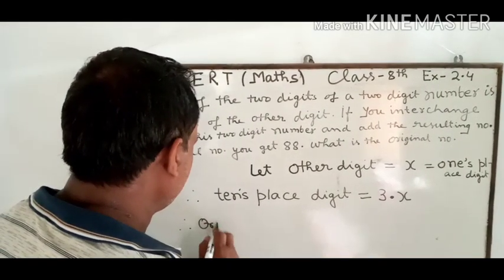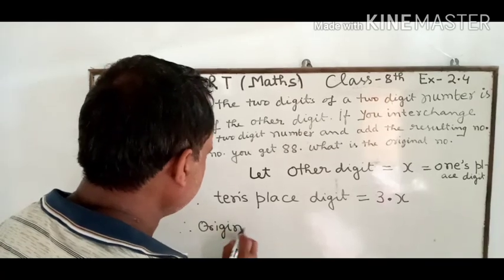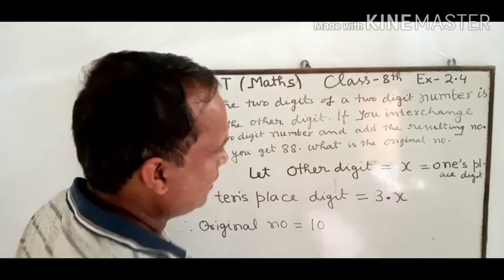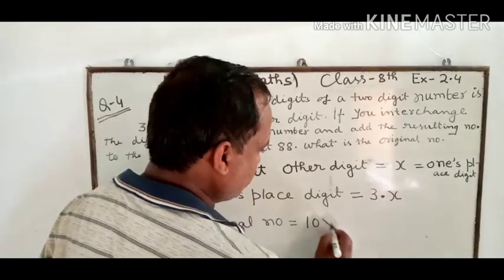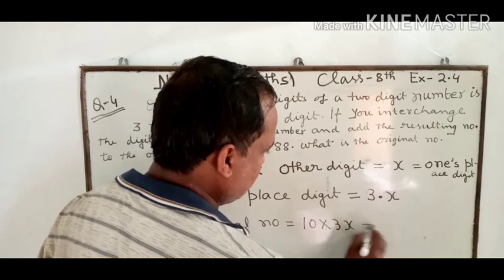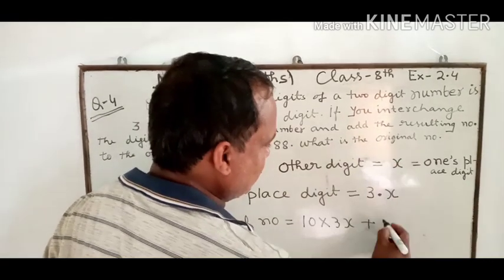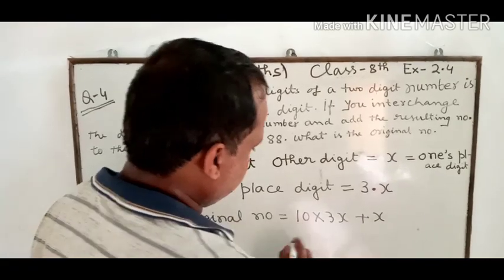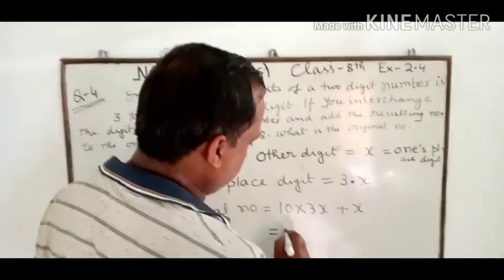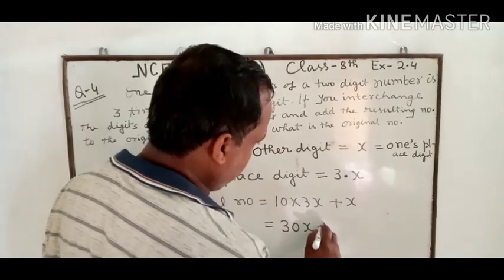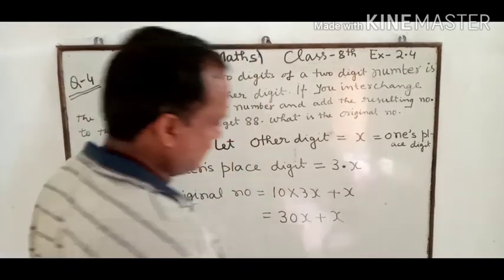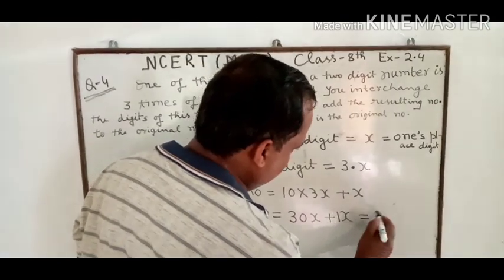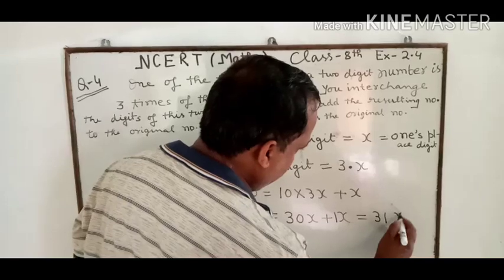Therefore the original number is equal to 10 multiplied by the tens place digit, which is 3x, plus the ones place digit x. So 10 times 3x is 30x, plus x gives us 31x. The original number is 31x.